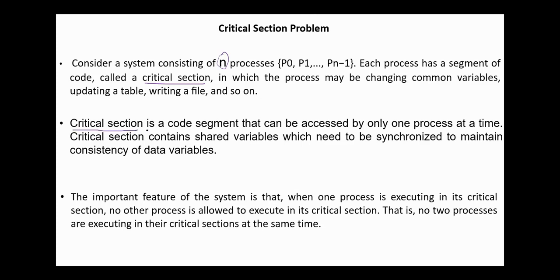A critical section is a code segment that can be accessed by only one process at a time. It contains shared variables which need to be synchronized to maintain consistency of data. The important feature is that when one process is executing in its critical section, no other process is allowed to execute in its critical section.